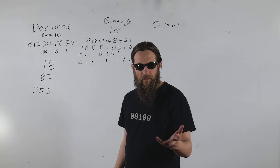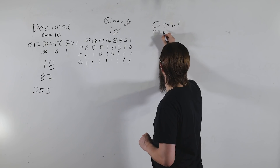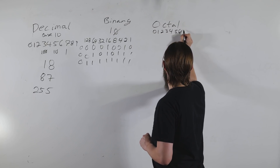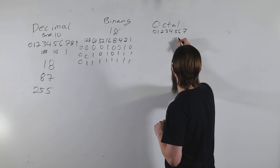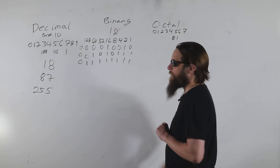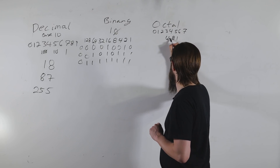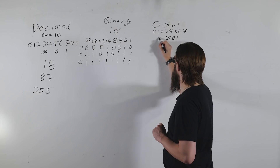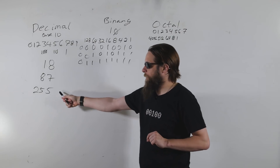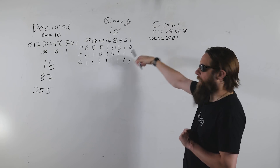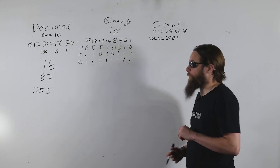Octal is a base eight numbering system, so the digits you're using are zero, one, two, three, four, five, six, and seven. The place values are also interesting: you have the ones place, an eights place, then eight times eight is 64, 64 times eight is 512, then 4096 — exponentially increasing in multiples of eight.